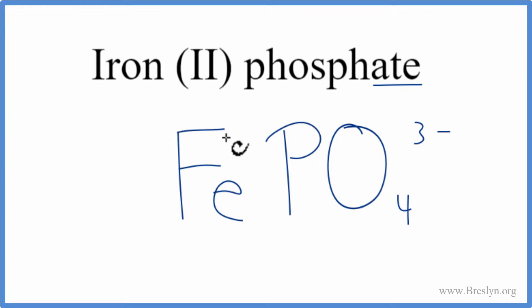What's nice is iron Fe, it's a transition metal, so they tell us right in the name. This 2, that Roman numeral, tells us the charge is 2 plus. Then we know the phosphate has a 3 minus ionic charge.